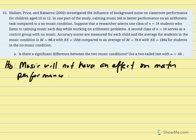The null hypothesis states that music will not have an effect on math performance — population 1 (those who listen to music) equals population 2 (those who do not). Another way to write this: mu1 minus mu2 equals zero, denoting they are equivalent to one another.